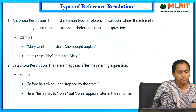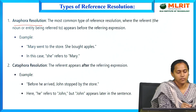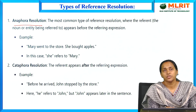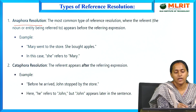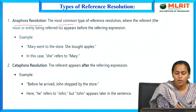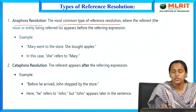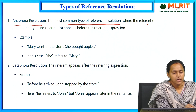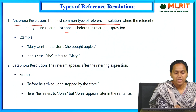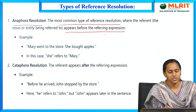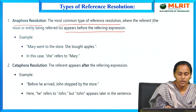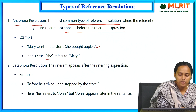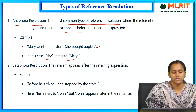The third type is anaphora resolution, which is the most common type of reference resolution, where the referent appears before the referring expression. For example: 'Mary went to the store. She bought apples.' Here, 'she' refers back to Mary. This is anaphora resolution.